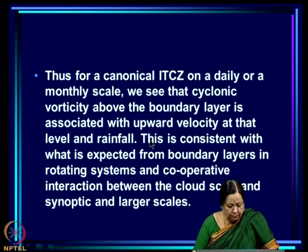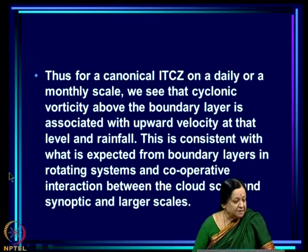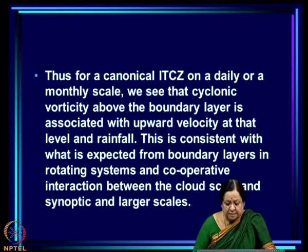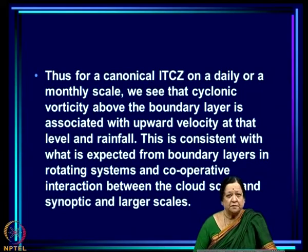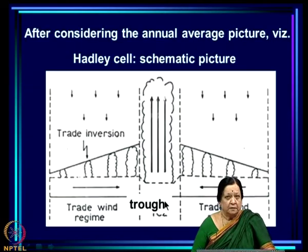For a canonical ITCZ on a daily or monthly scale, cyclonic vorticity above the boundary layer is associated with upward velocity at that level and rainfall. This is consistent with what is expected from boundary layers in rotating systems and cooperative interaction between cloud scale and synoptic and larger scale. We see that for both daily and monthly scales, cyclonic vorticity above the boundary layer is associated with upward velocity and rainfall — consistent with Ekman layer theory and boundary layer dynamics in rotating systems.